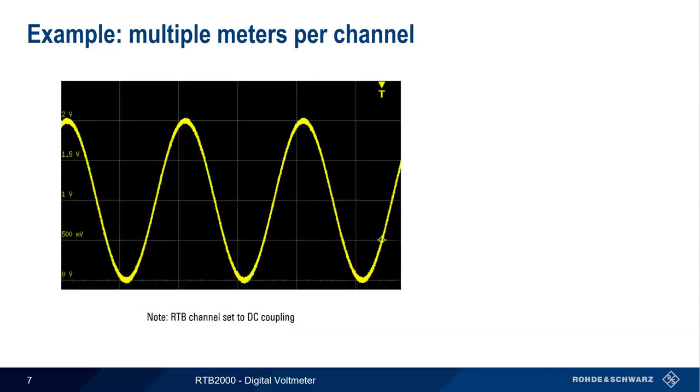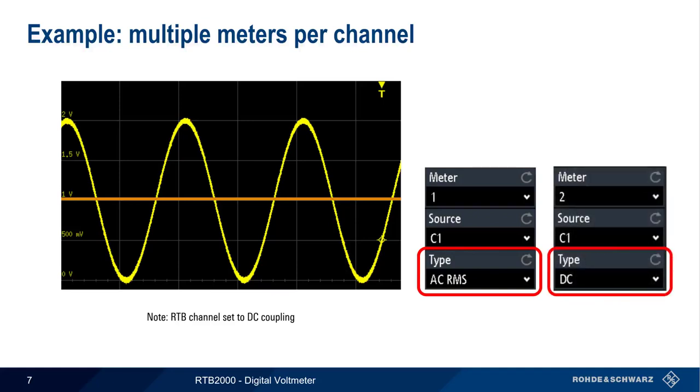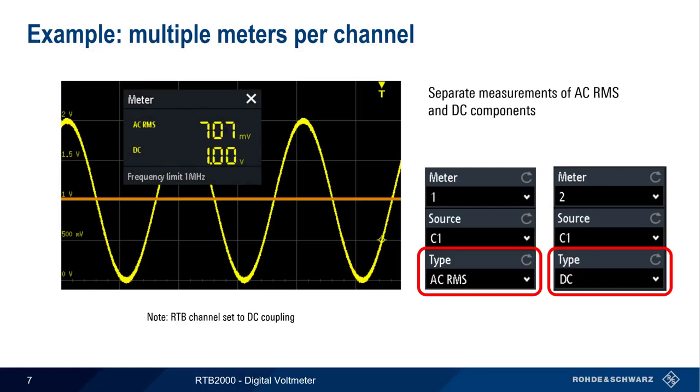In the previous example, each meter was measuring on a different channel, but it's also possible to have multiple meters assigned to a single channel. In this example, channel 1 is measuring a 2-volt peak-to-peak sinusoid with a 1-volt DC offset. We assigned the first meter to channel 1 with type AC RMS, and the second meter to channel 1 with type DC. The result is separate measurements of both the AC RMS and the DC components of the signal.